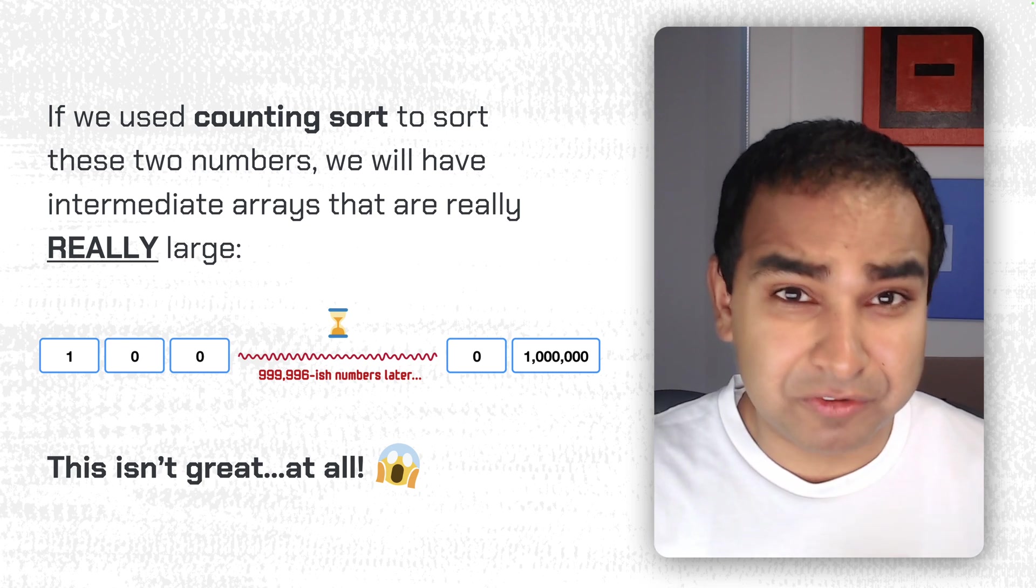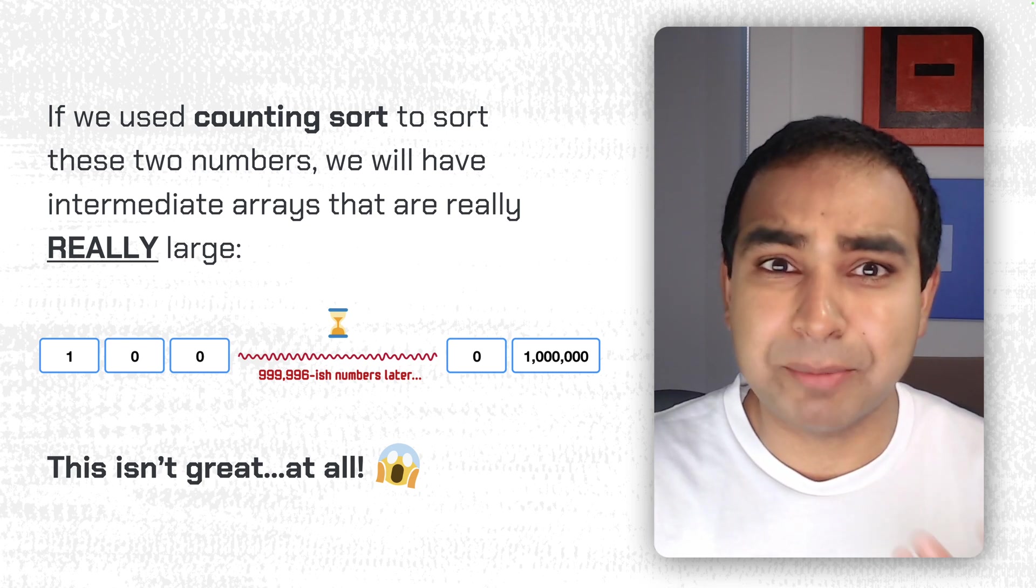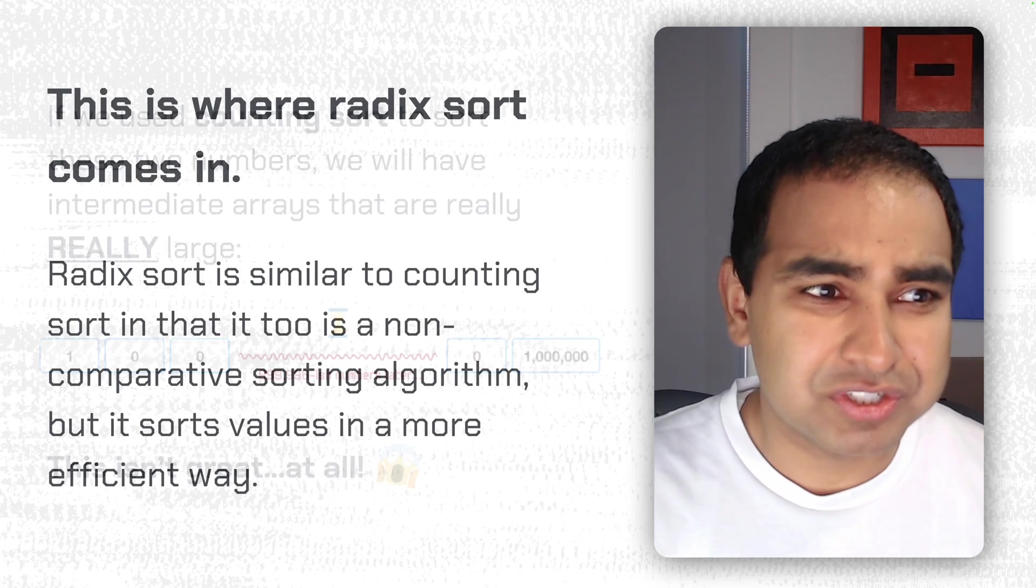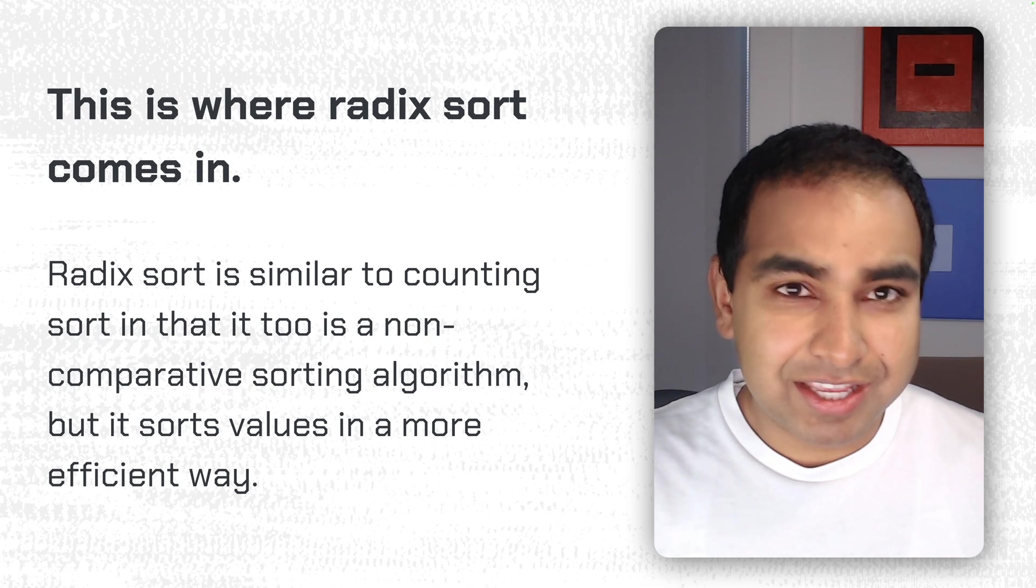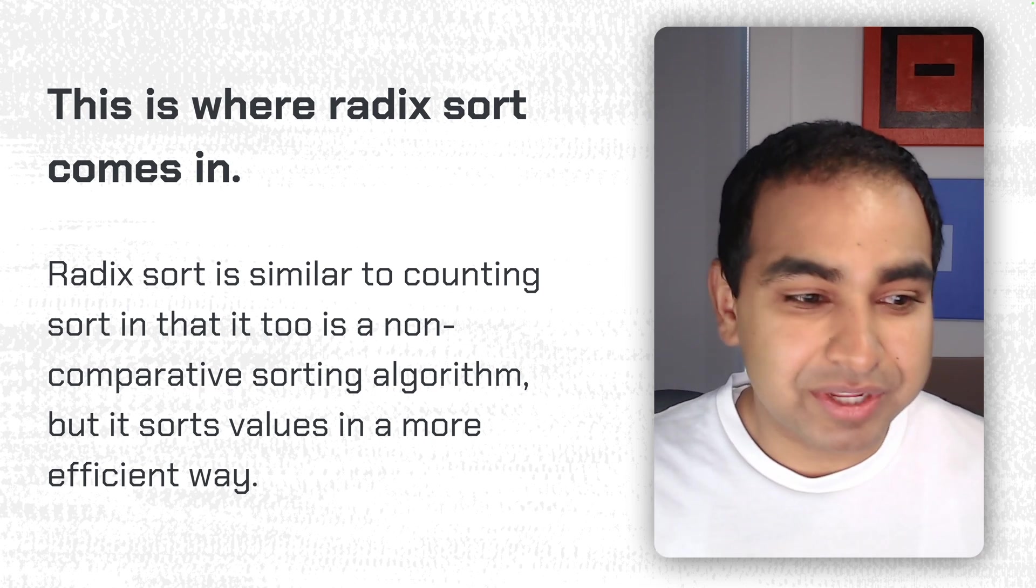And you can imagine that for sorting two items, whose array size in between is around a million, is not very efficient. And this is where RadixSort really comes in. It's similar to CountingSort in that it, too, is a non-comparative sorting algorithm. There's going to be no comparisons of which value is greater than or less than another value,